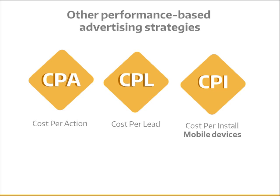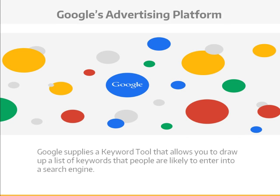But for most online businesses, CPC and CPM are the two most popular and the two most effective forms of buying traffic. The two most popular platforms to buy that traffic are probably Google and Facebook. Each of those platforms works in a slightly different way, and each has its own advantages and disadvantages. AdWords, Google's advertising platform, sells both CPC and CPM ads.